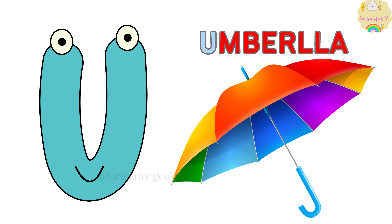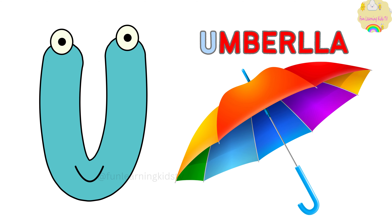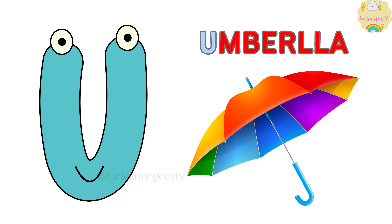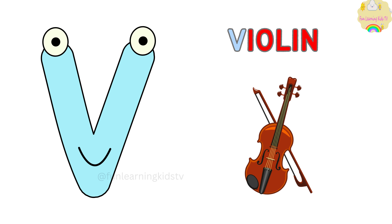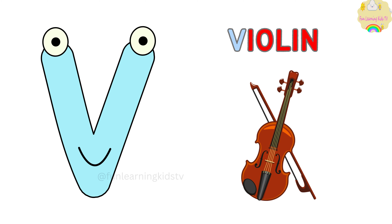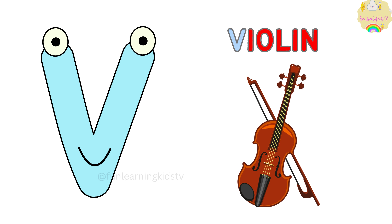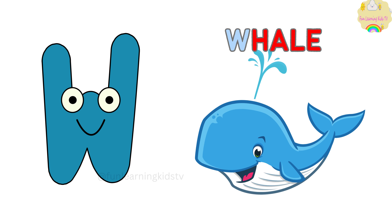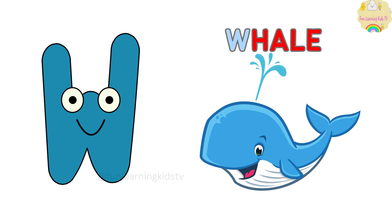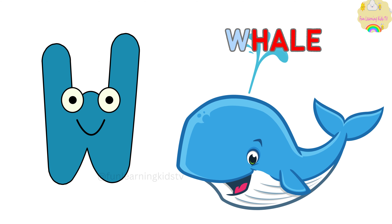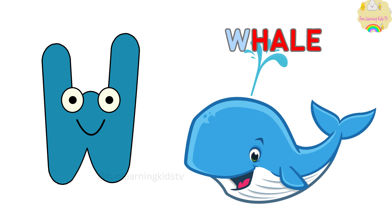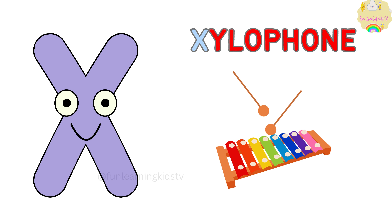U is for Umbrella. U-U-Umbrella, U-U-Umbrella, U-Umbrella. V is for Violin. V-V-Violin, V-V-Violin, V-Violin. W is for Whale. W-W-Whale, W-W-Whale, W-Whale.